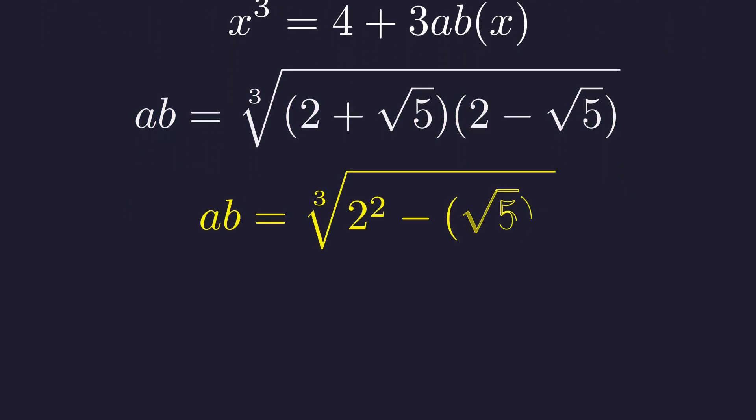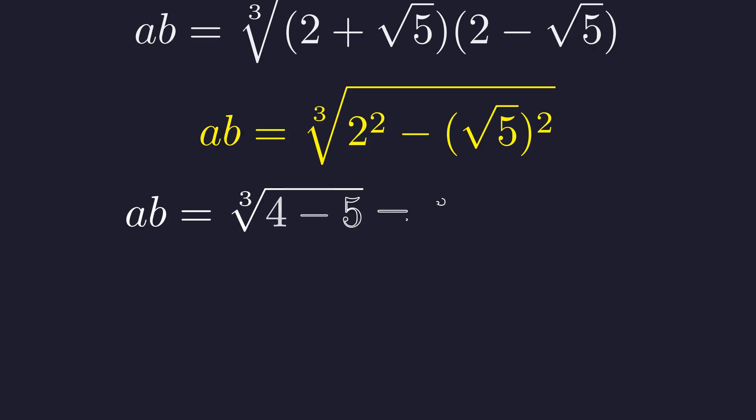Using the difference of squares formula, this becomes 2 squared minus root 5 squared. That's 4 minus 5, which gives us negative 1. And the cube root of negative 1? That's just negative 1. This is exactly what we needed.